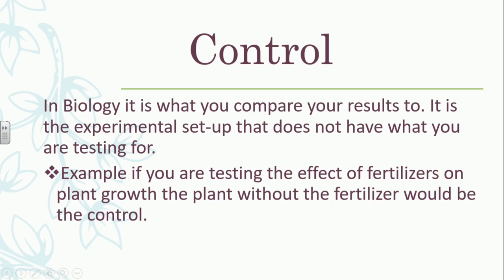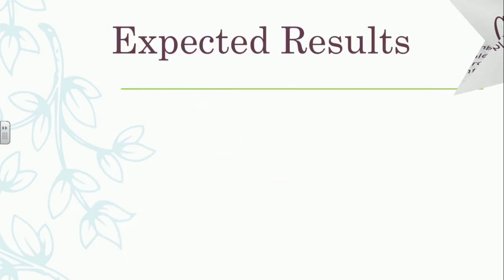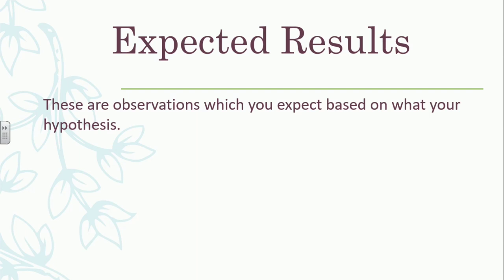The next thing is expected results. This isn't something you must get, but something you anticipate happening. These are observations which you expect based on your hypothesis, and they must be based on your hypothesis. You can't say the nail will rust faster at the seaside in your hypothesis but then have your expected results say the nail in the mountains would have more rust — it must match your hypothesis.